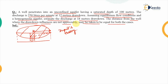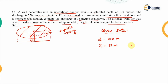Now we will write down the data that is given to us. The depth of the well, given by small d, is 100 meters. Corresponding to the first condition, the drawdown s1 is 12 meters; for the second condition, the drawdown s2 is 18 meters. For the first condition, the discharge Q1 is given as 250 liters per minute, and for the second condition, the discharge Q2 is to be estimated.